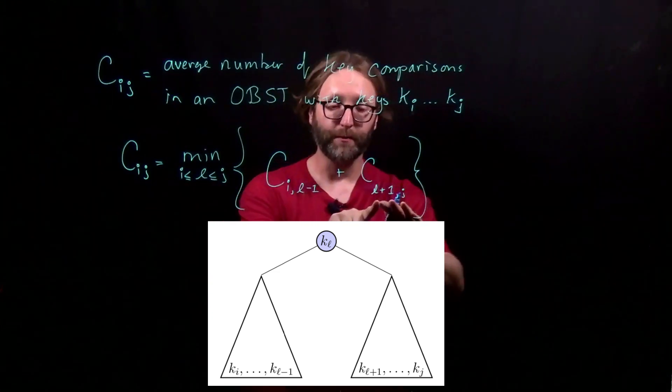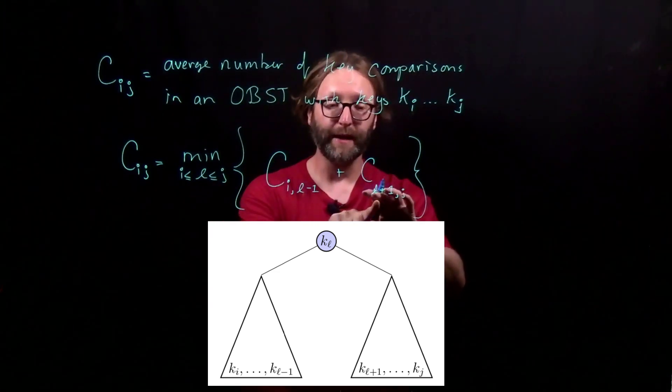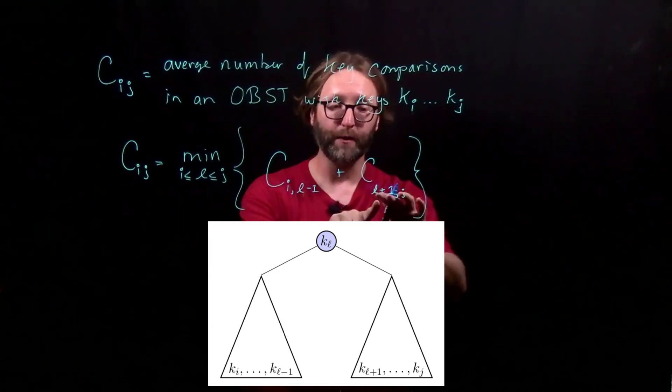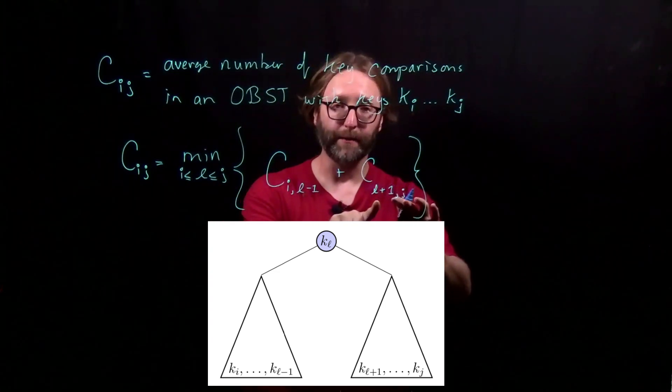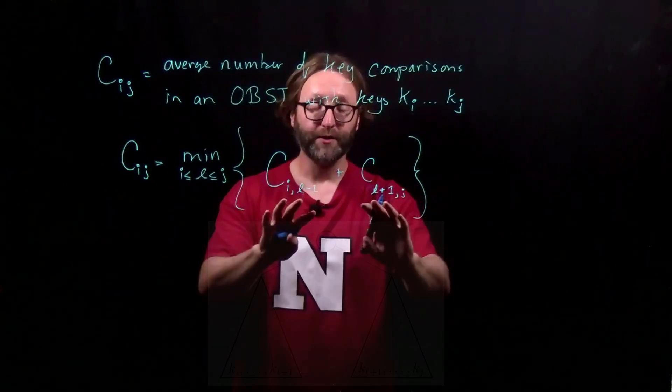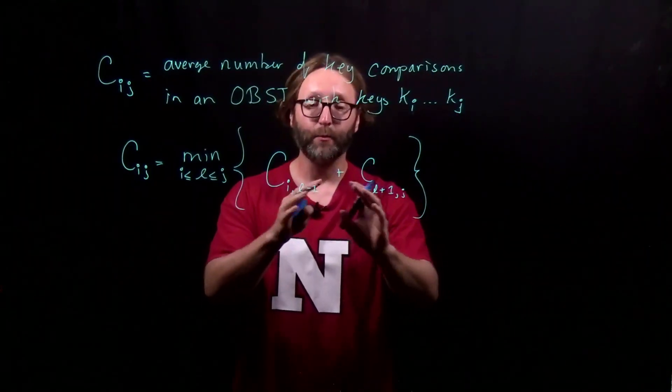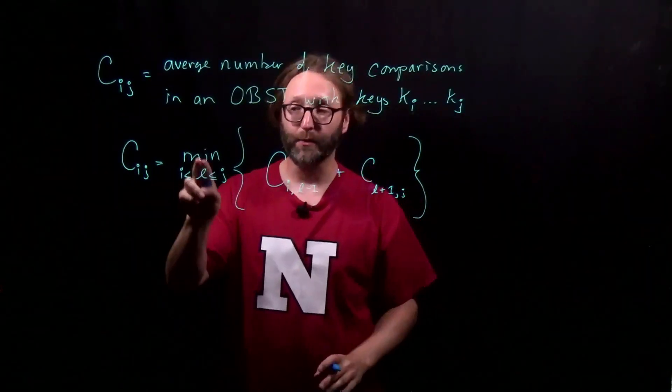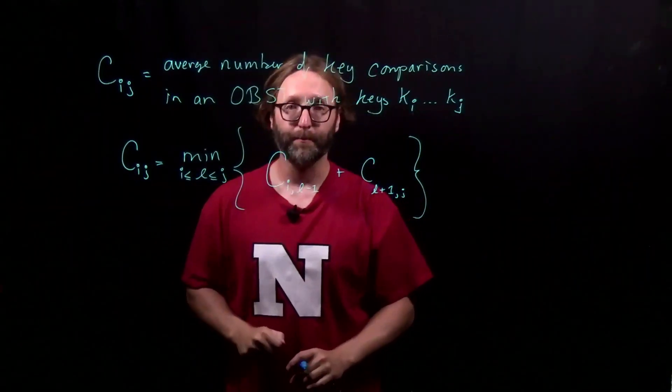The right subtree contains keys l plus 1 through j. Assuming that we've already computed these costs, we add them together and take the minimum.